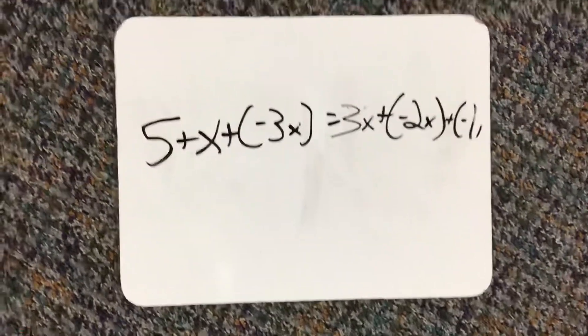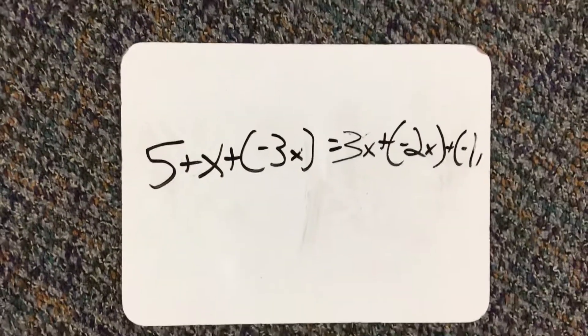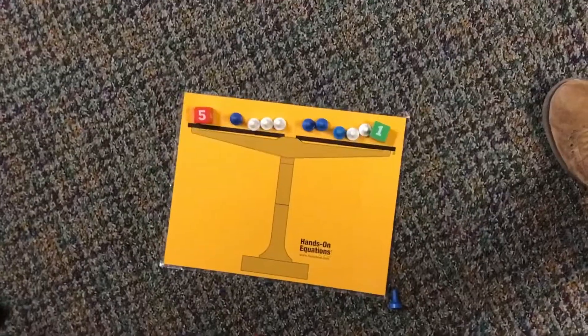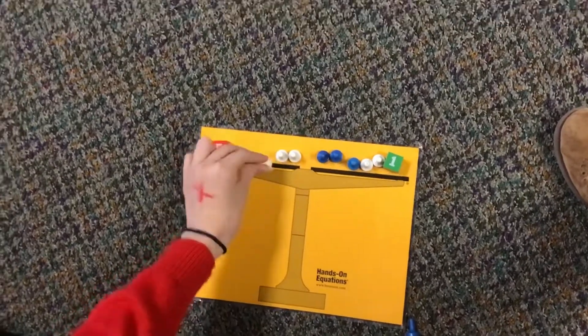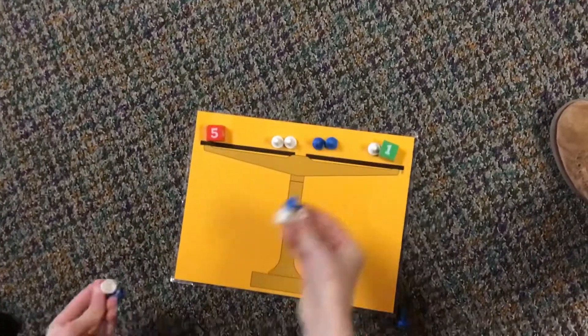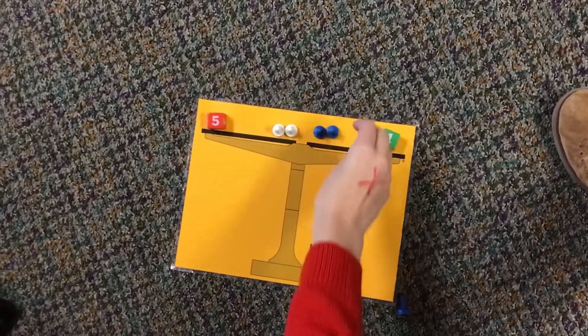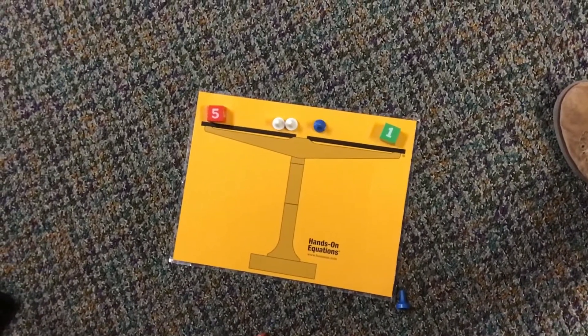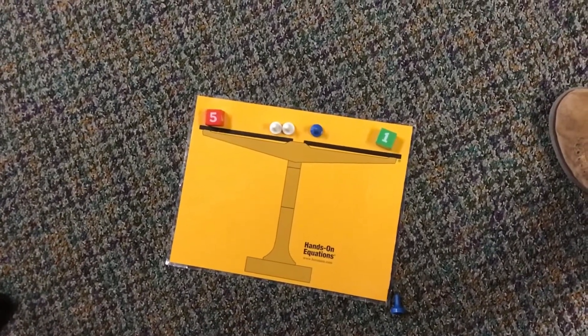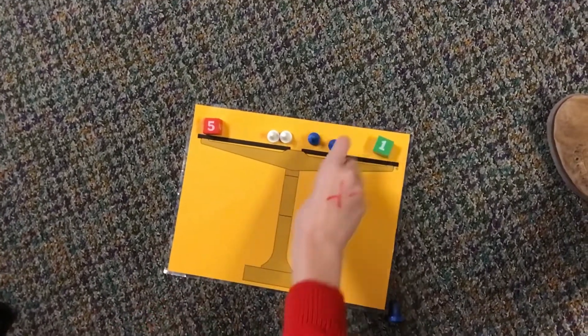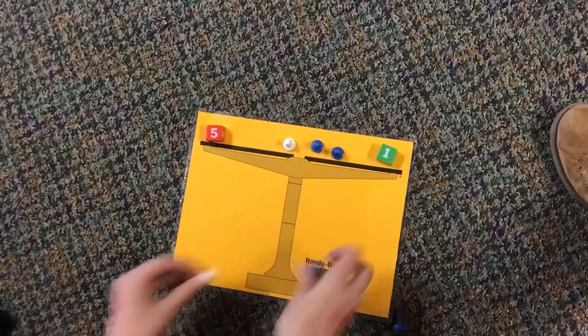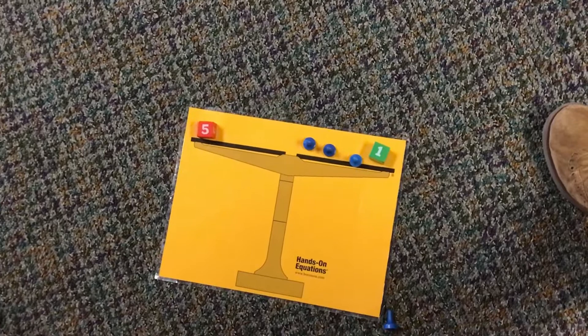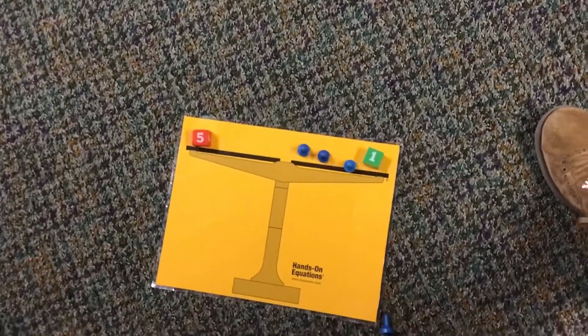Our last problem is 5 plus x plus the opposite of 3x equals 3x plus the opposite of 2x plus 8. I'm going to take away this pair of 0 on this side and a pair of 0 on this side. Then I'm going to add a positive 1 on both sides. And if they are the same number, they equal a pair of 0. Then I'm going to add a positive 1 on both sides.